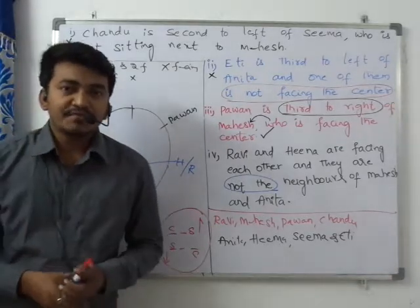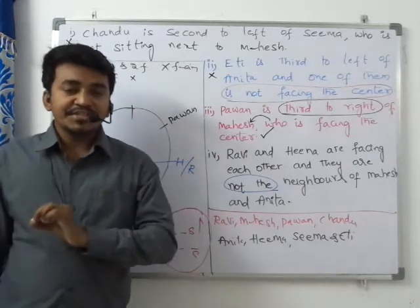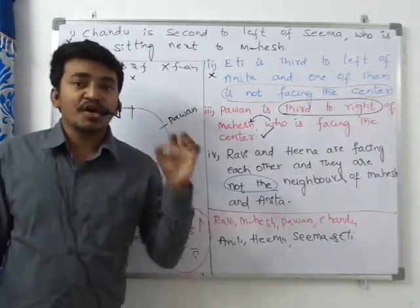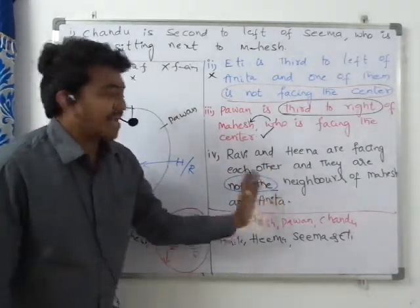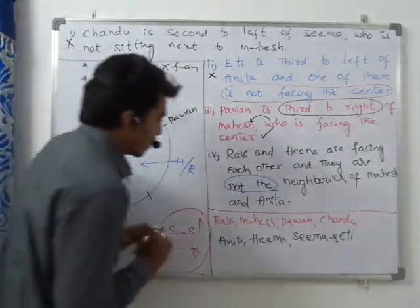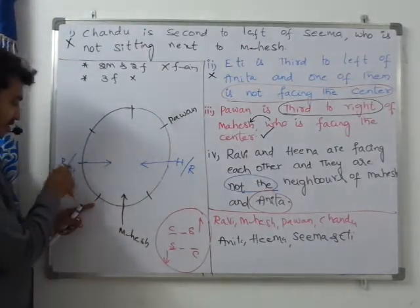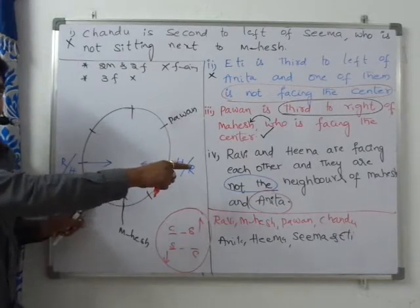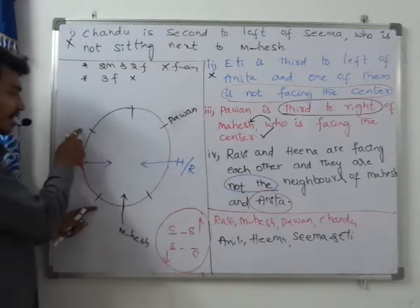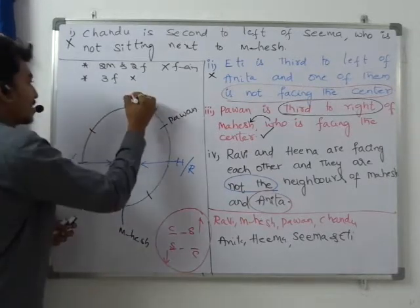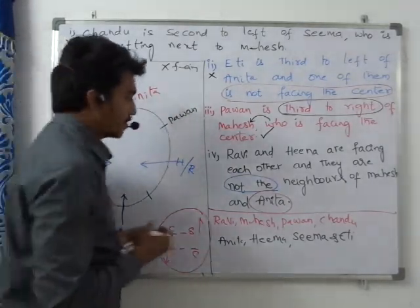From this clue we can also fix the position of Anita. The clue says Ravi and Hina are not neighbors of Anita either. If Anita is placed adjacent to Ravi or Hina, they become neighbors, which is not allowed. The only position where Anita is not adjacent to either Ravi or Hina is the top position. So Anita is placed at the top. We have now used clue four.